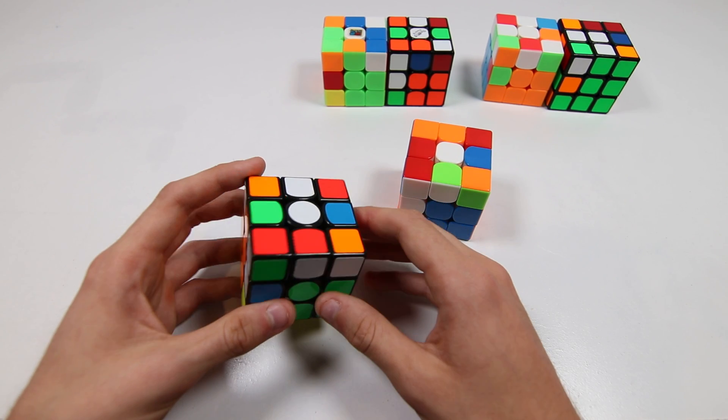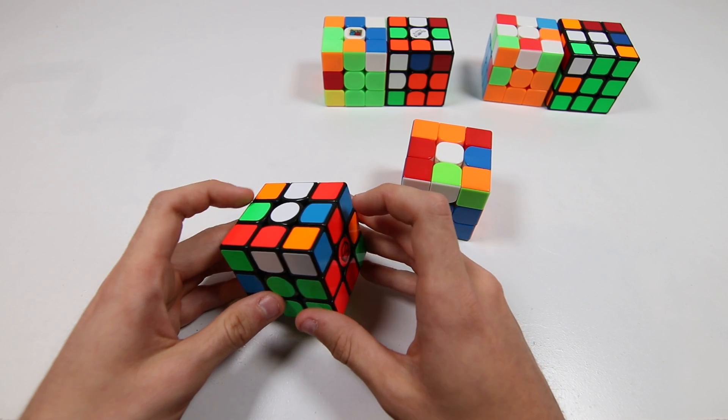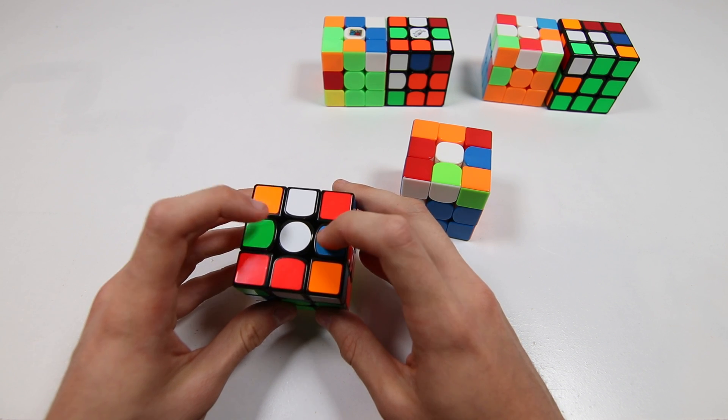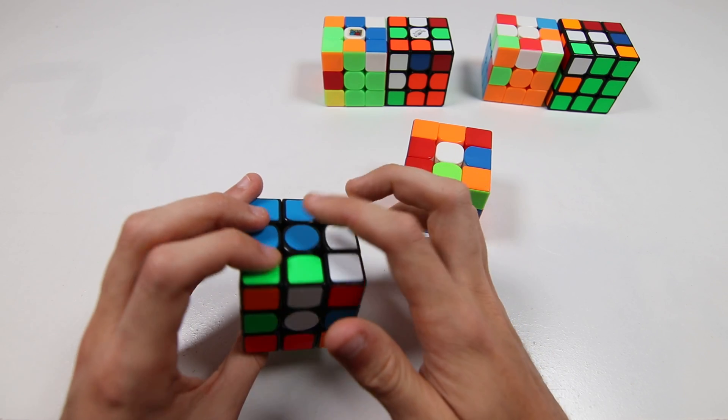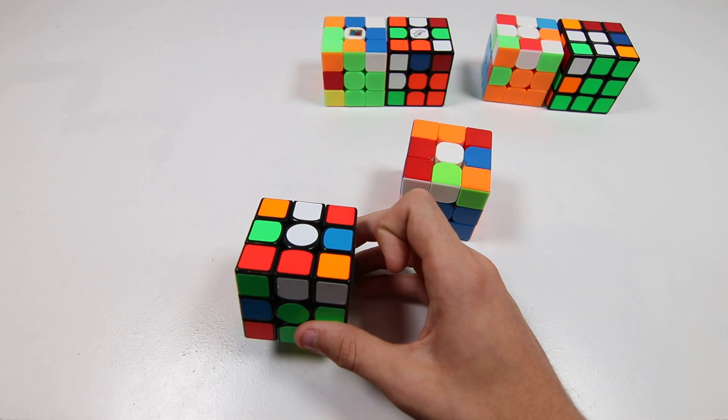Anyways, with that said, so these cases, it's when we have both edges in the U layer, and the important thing to note is that we're going to be talking about cases where the colors that are on the U layer are opposites. So green is opposite to blue, green center, blue center, you should have that color scheme. If you don't, you should know what I'm talking about anyways.